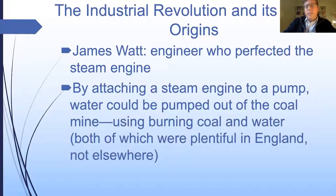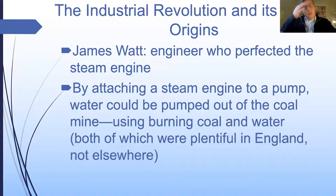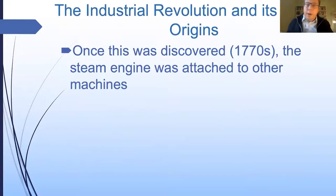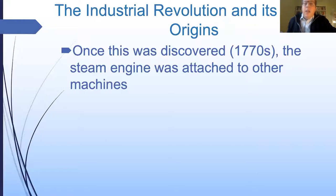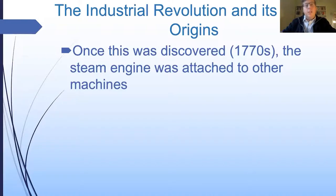It's important to emphasize that the Industrial Revolution happened first in England in part because England was much more plentiful in coal and water than most other countries, including continental Europe. But things didn't stop there. Once Watt and others saw how powerful a better-functioning steam engine attached to a machine could be, people realized the possibilities were limitless. Anything operated by hand could almost certainly also be operated by an engine like the steam engine.